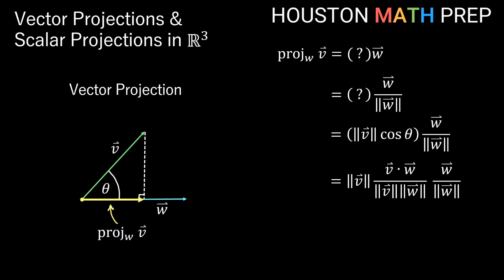We'll substitute the dot product formula in. The nice thing is we can now calculate all of these things by hand without a calculator. Simplifying, we can reduce a pair of V magnitudes, and write the pair of W magnitudes together on the bottom. So a cleaner version is the dot product on top, the magnitude of W squared on the bottom, and since this is in the direction of W, it's all multiplied by vector W as well.